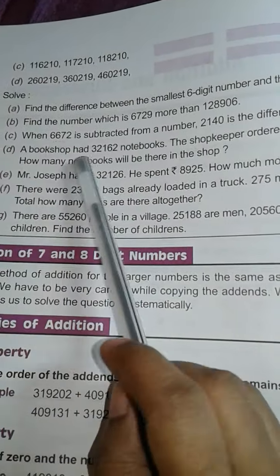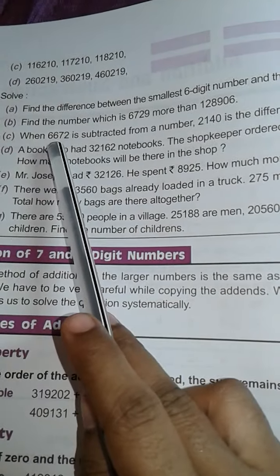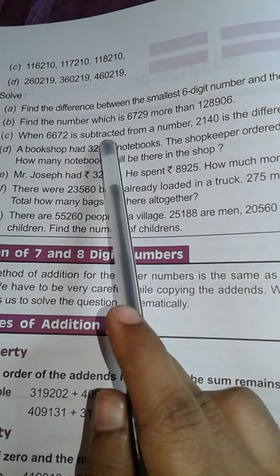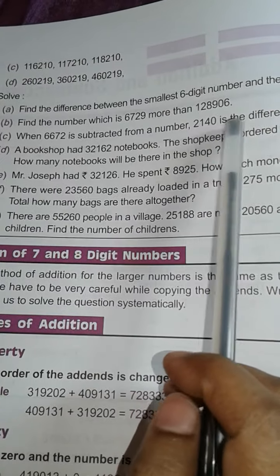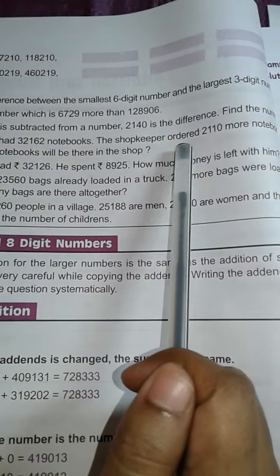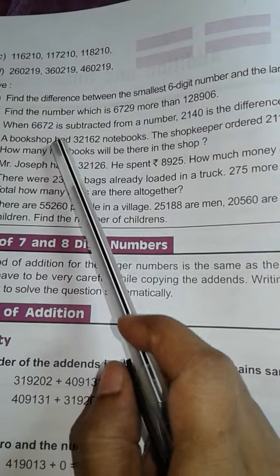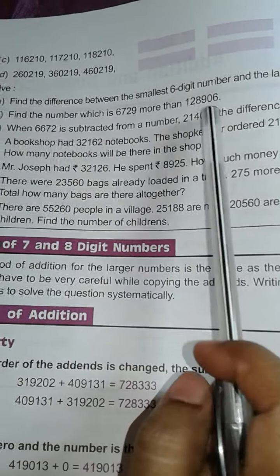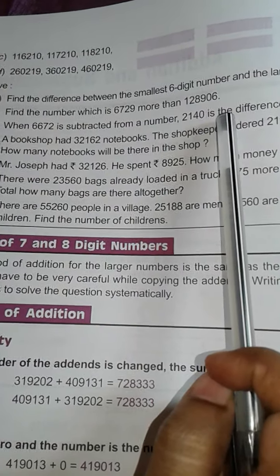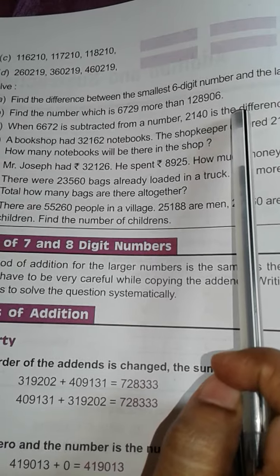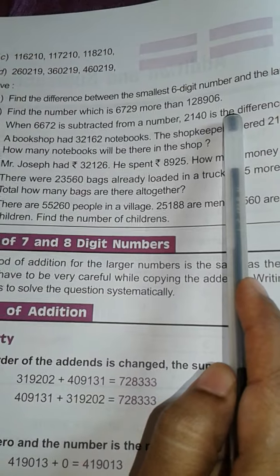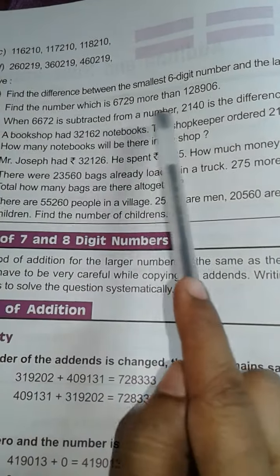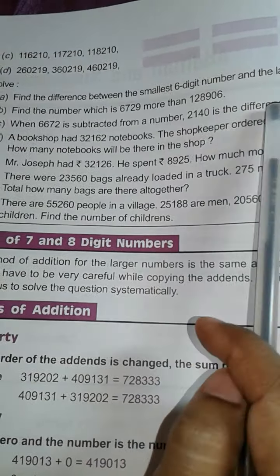Then see, when 6,672 is subtracted from a number, 2,140 is the difference. Find the number. Here children, subtraction is given and difference is given. You have to find out the minuend. To get minuend, you have to add subtraction and difference. So you add these two numbers, then you get the answer.